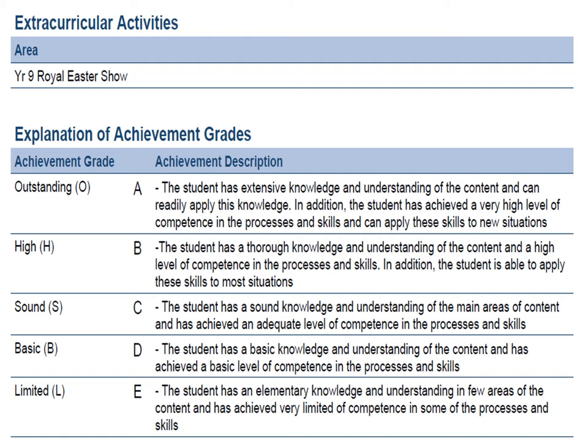Next to the outstanding or A achievement grade, we can see an achievement description. For example, the outstanding or A grade descriptor says the student has extensive knowledge and understanding of the content and can readily apply this knowledge. The table basically gives you an overall guide of what students are able to do for each of the A to E grades.